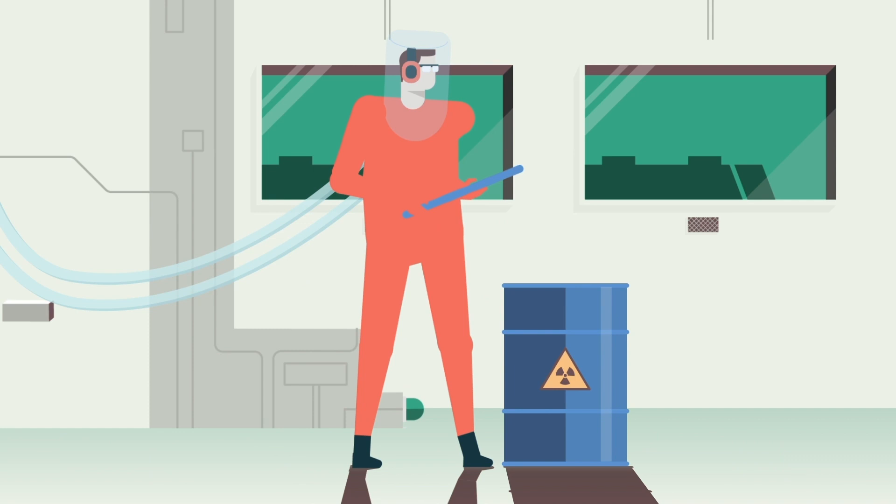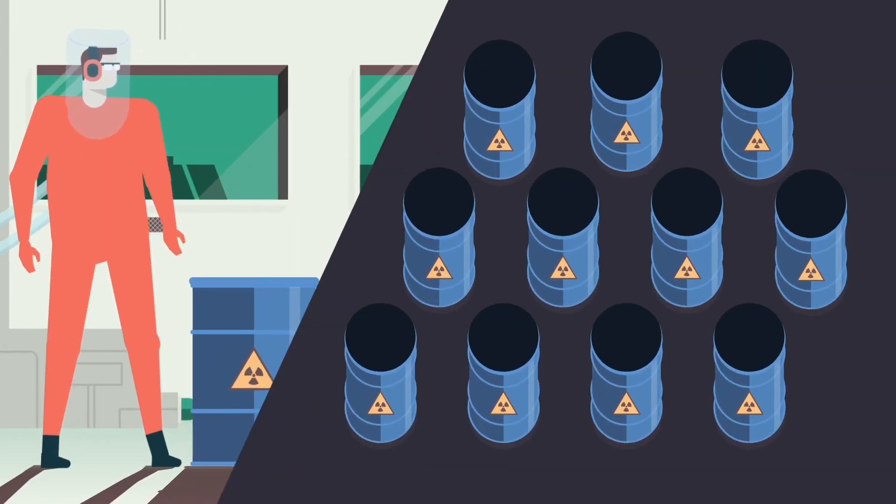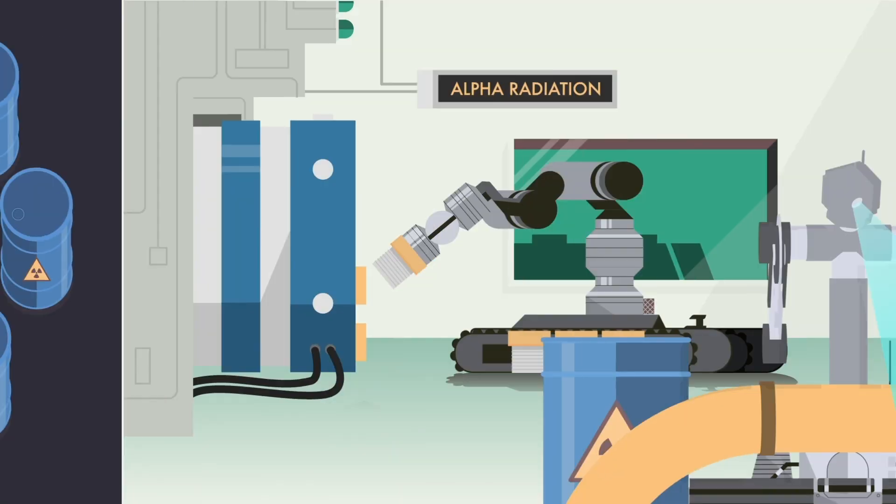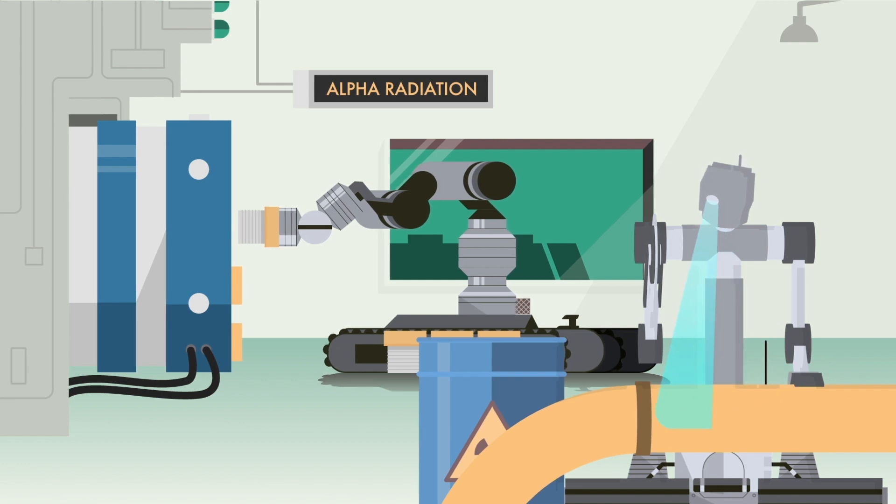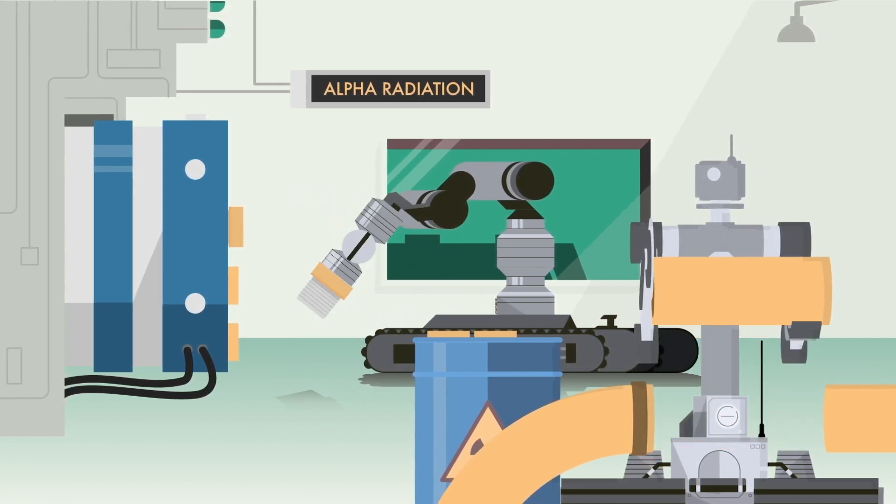One barrel of waste packaged by one human results in another 11 barrels of secondary waste, filled with contaminated suits. That's why they like to use us instead. We work longer shifts and reduce problematic secondary waste.